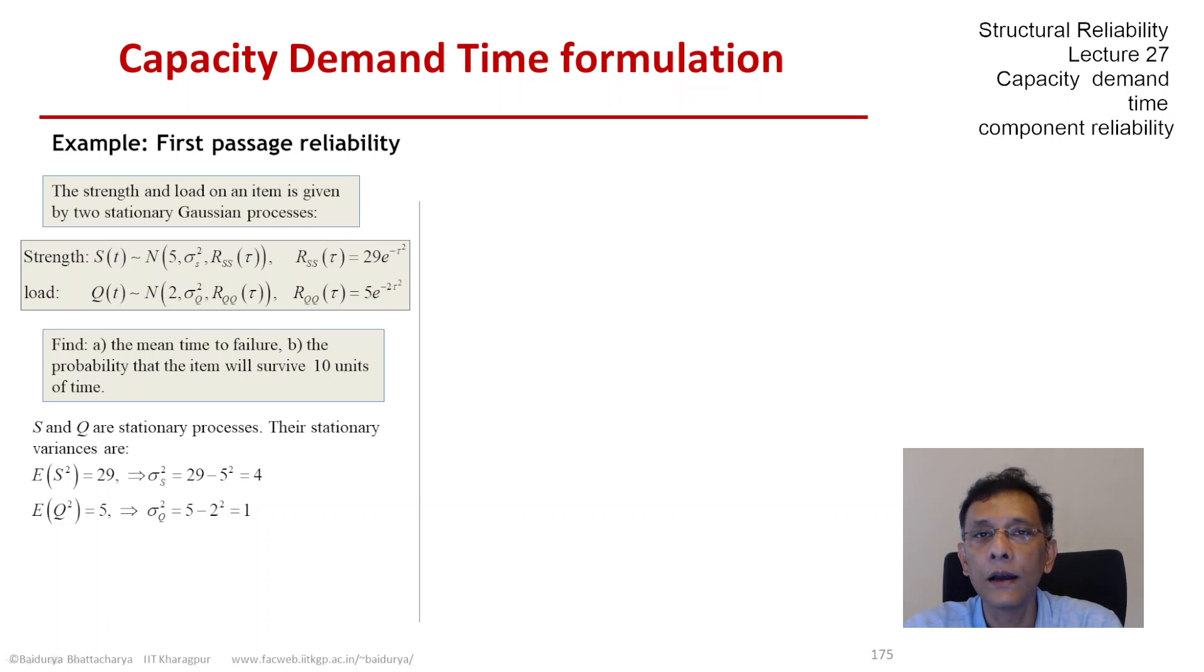Both of these come from R_ss and R_qq respectively that you see on the top. That gives us the variance of S as E[S²] minus the mean of S squared.